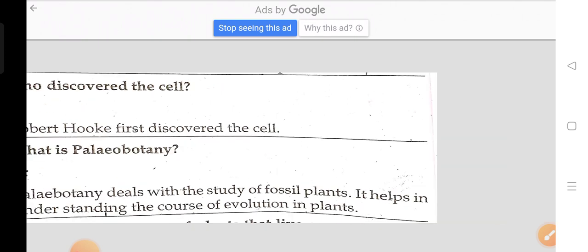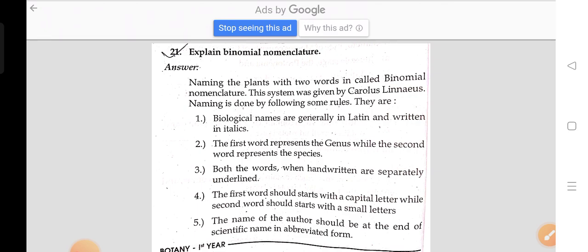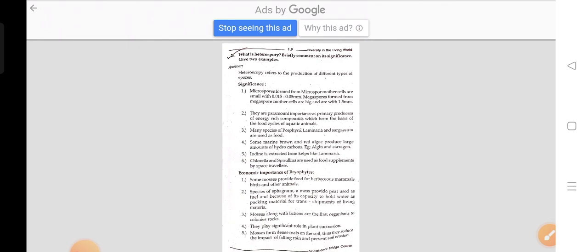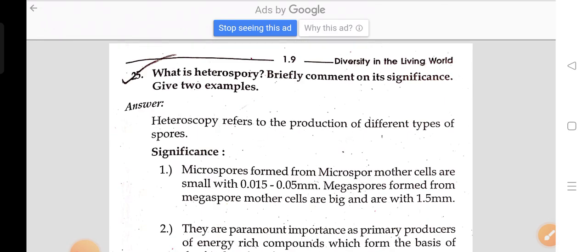What is palaeobotany? Explain binomial nomenclature. What is diaspory? Briefly comment on its significance, give two examples. Explain different placentation. Describe any two special types of inflorescence.